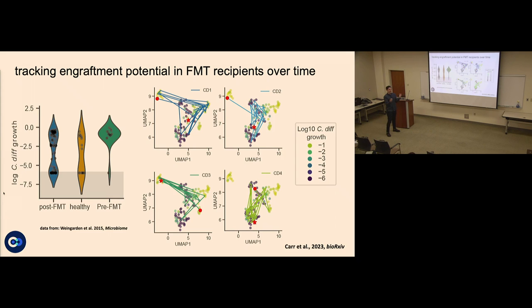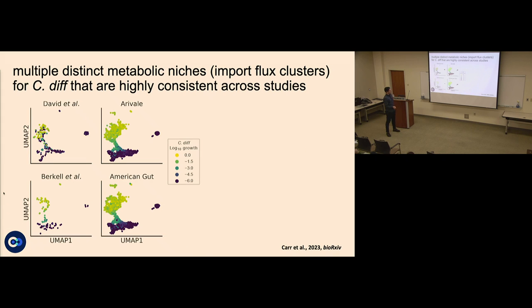We can look at time series from this dataset post-FMT using a UMAP projection of the community import flux space — what the total microbiome is consuming from the diet, projected down to two dimensions, colored by C. diff growth rate. Most people start in a region of high invasibility and end in a region of less invasibility. We also look at the import flux for C. diff itself — it smears out in this space with potentially three clusters: a high-growth cluster, an intermediate-to-low growth cluster, and a no-growth cluster — consistent across four different datasets.